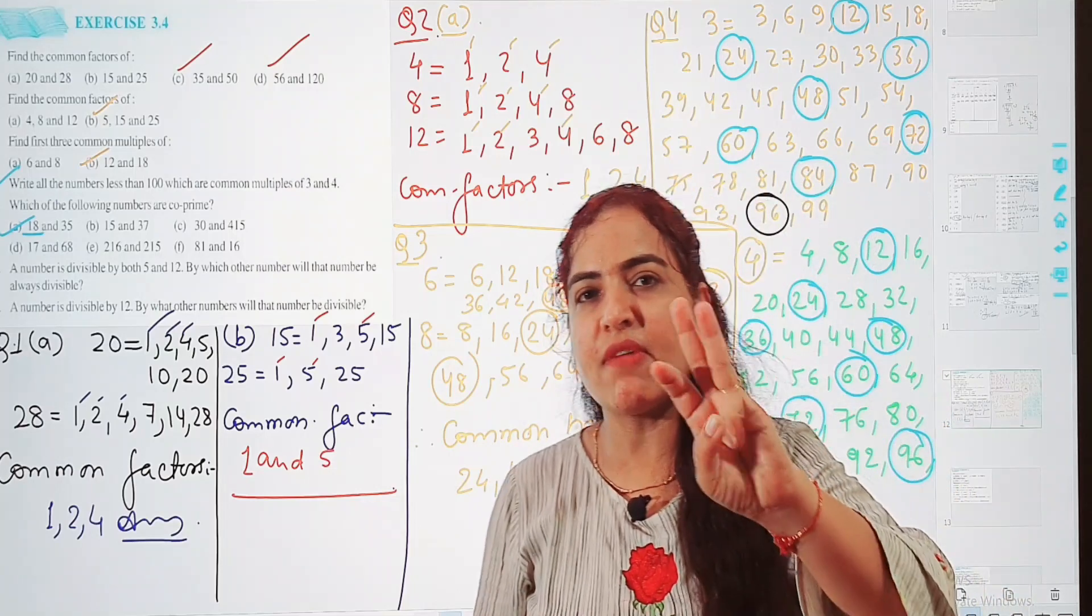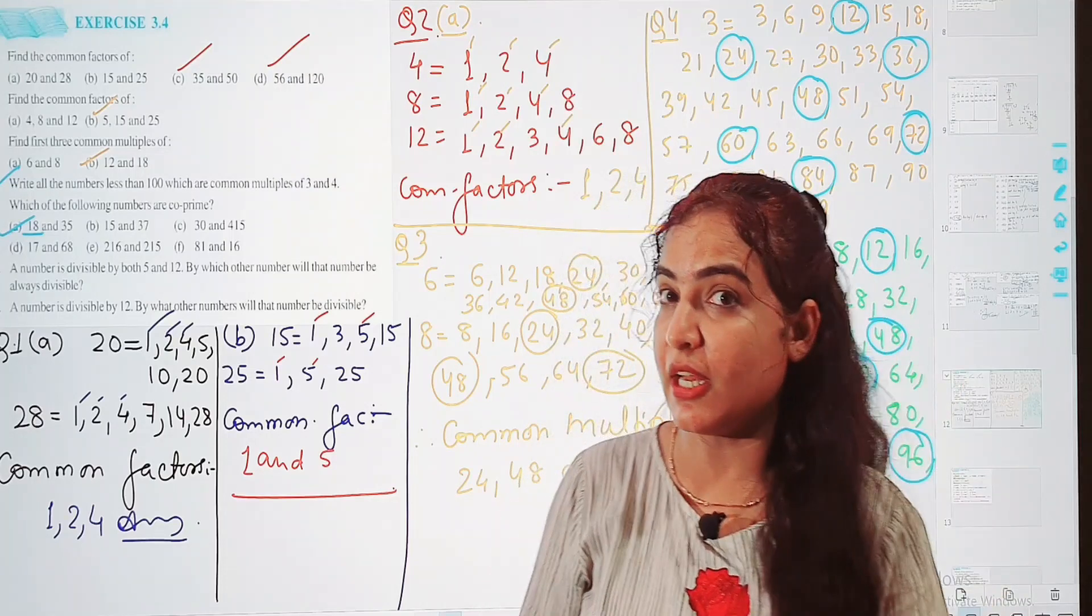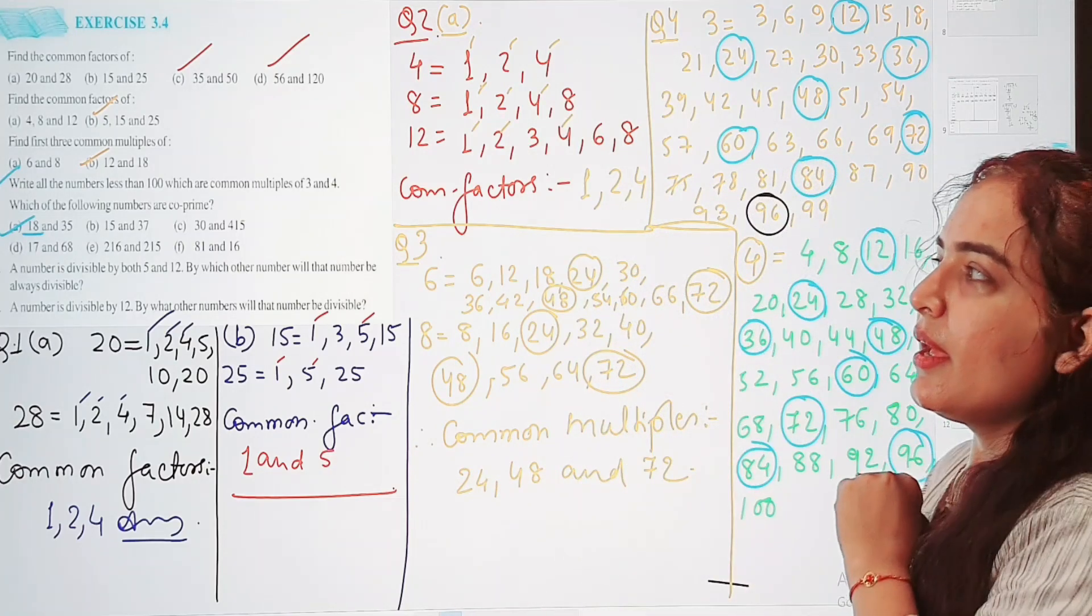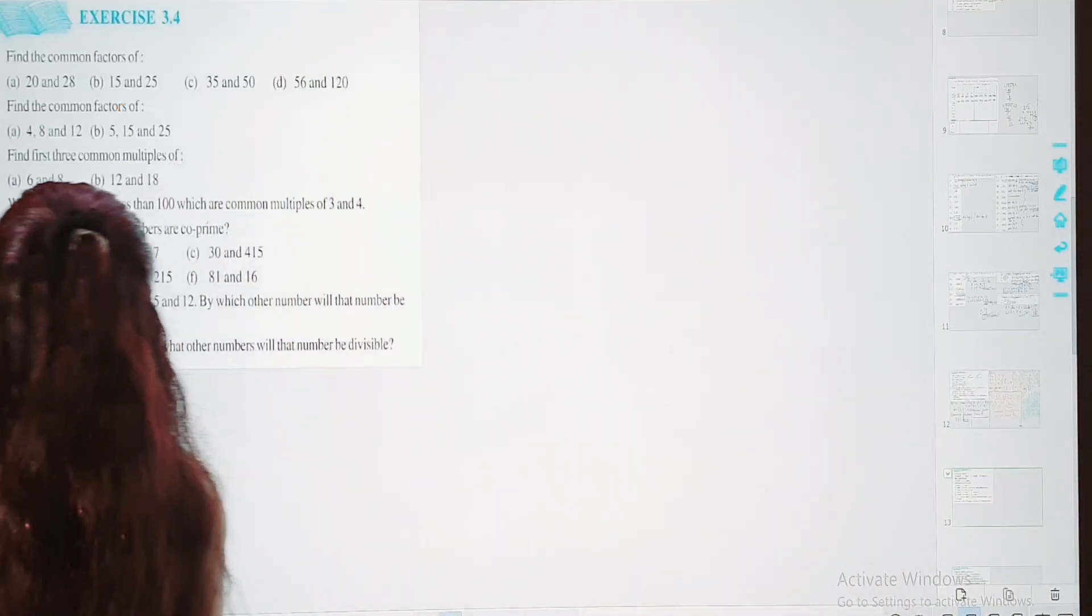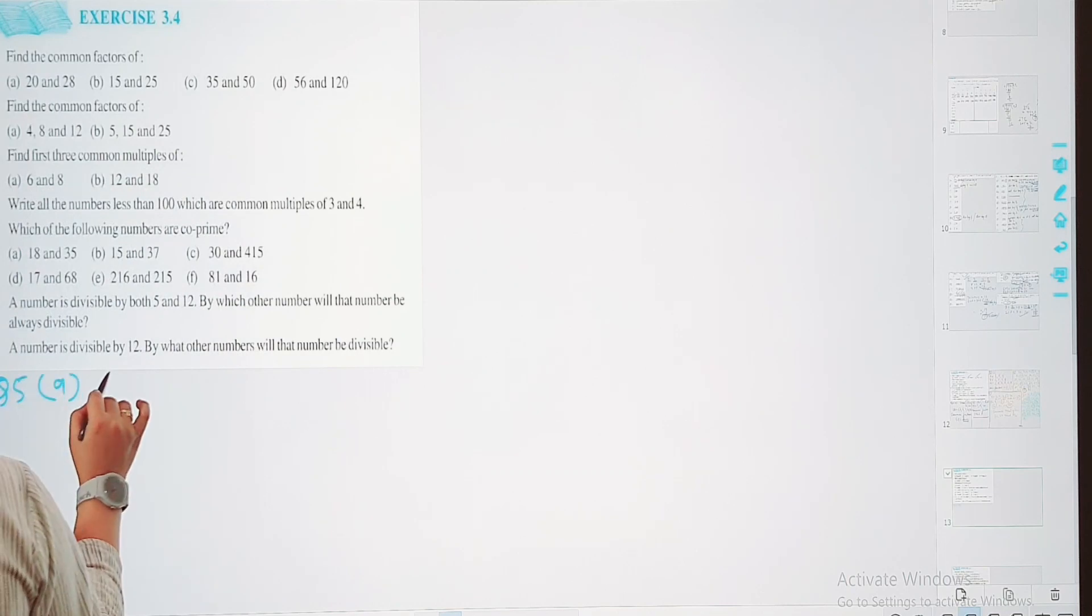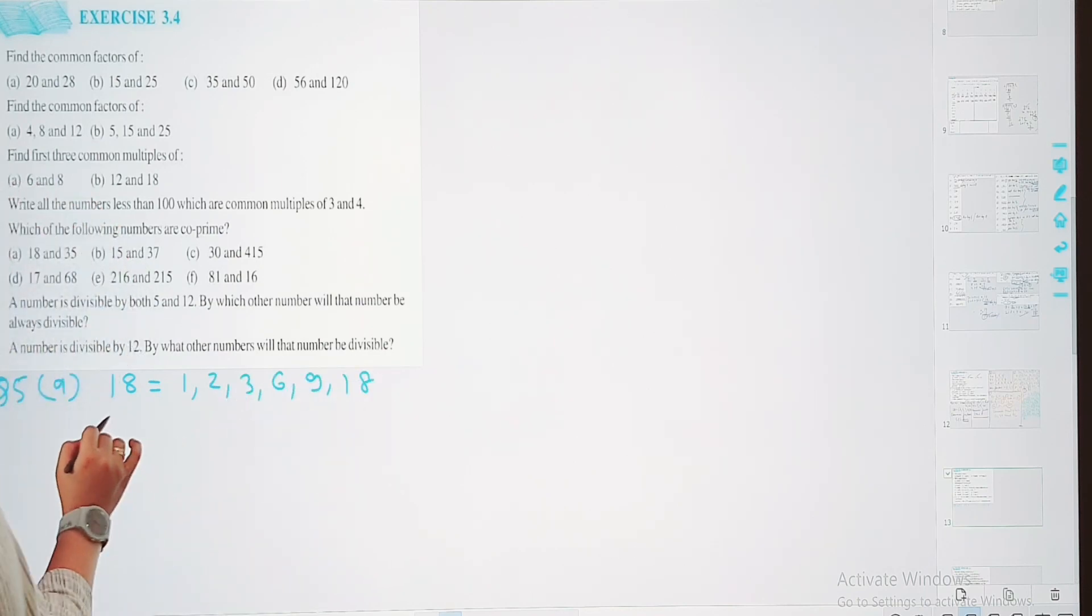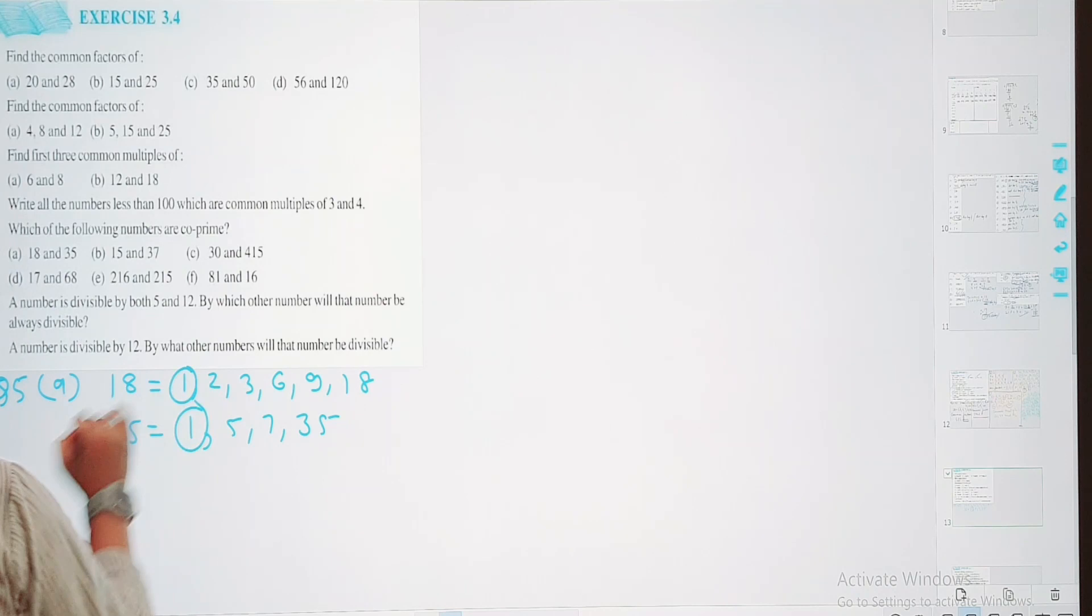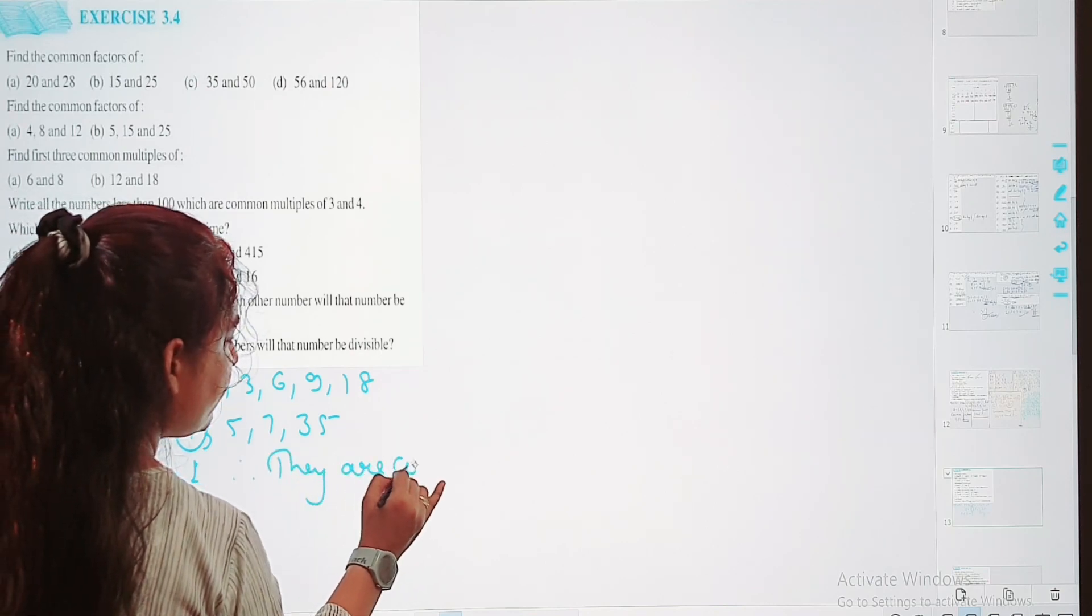Of course these are co-prime numbers. Kyunki aapka jo 35 hai wo srif 1, 5, 7, aur 35 ki table mein aata hai. Jabki 18 jo aata hai wo 1, 2, 3, 6, 9, aur 18 ki table mein aata hai. In doonho mein aisa koji common number nai hai other than 1. Therefore, 18 or 35 are co-prime numbers.